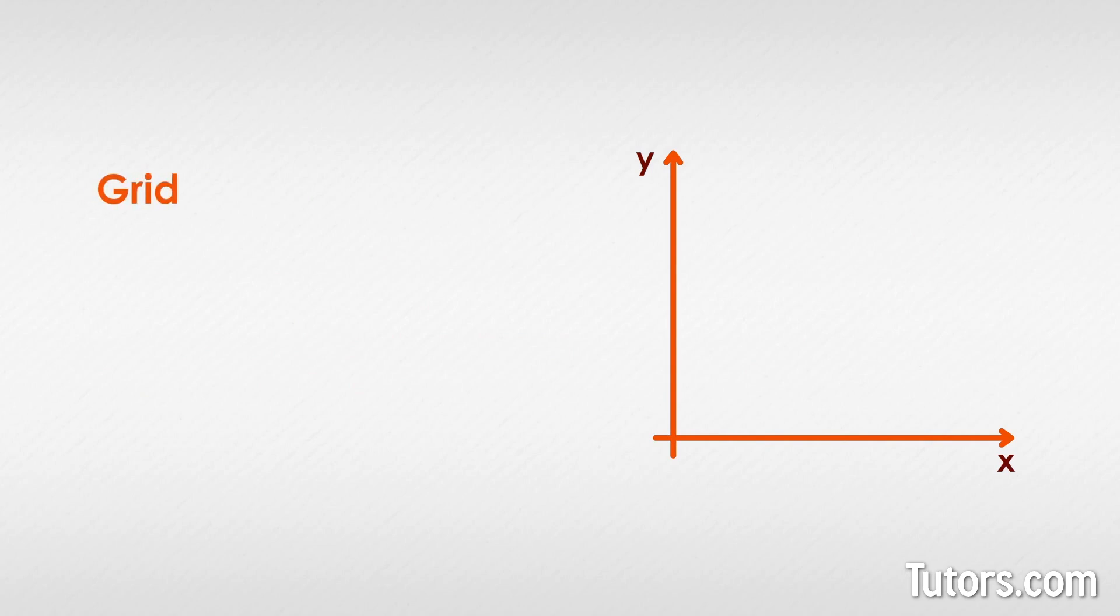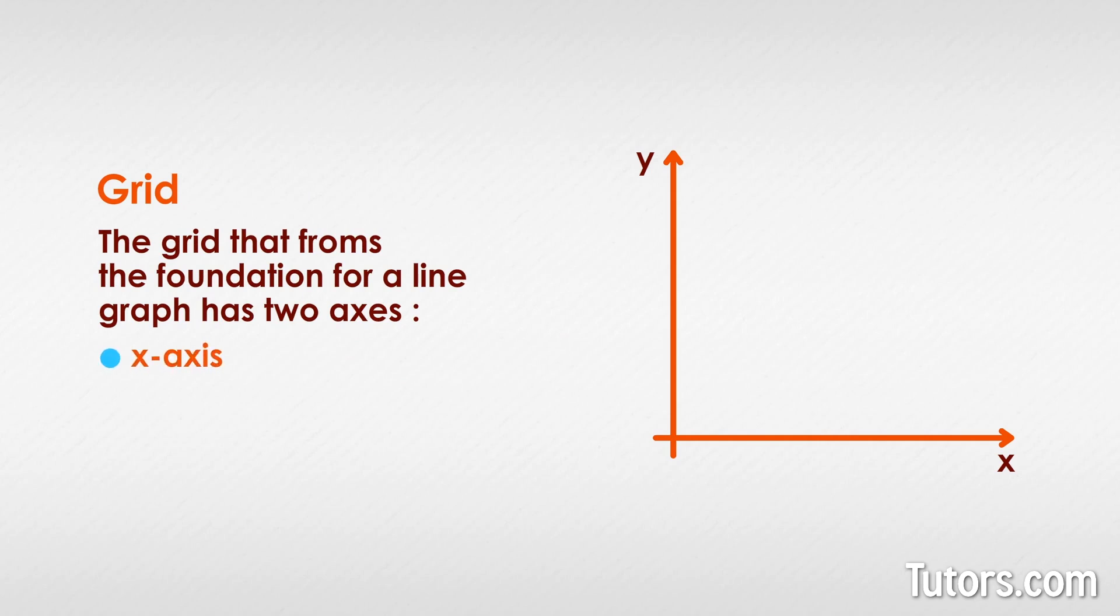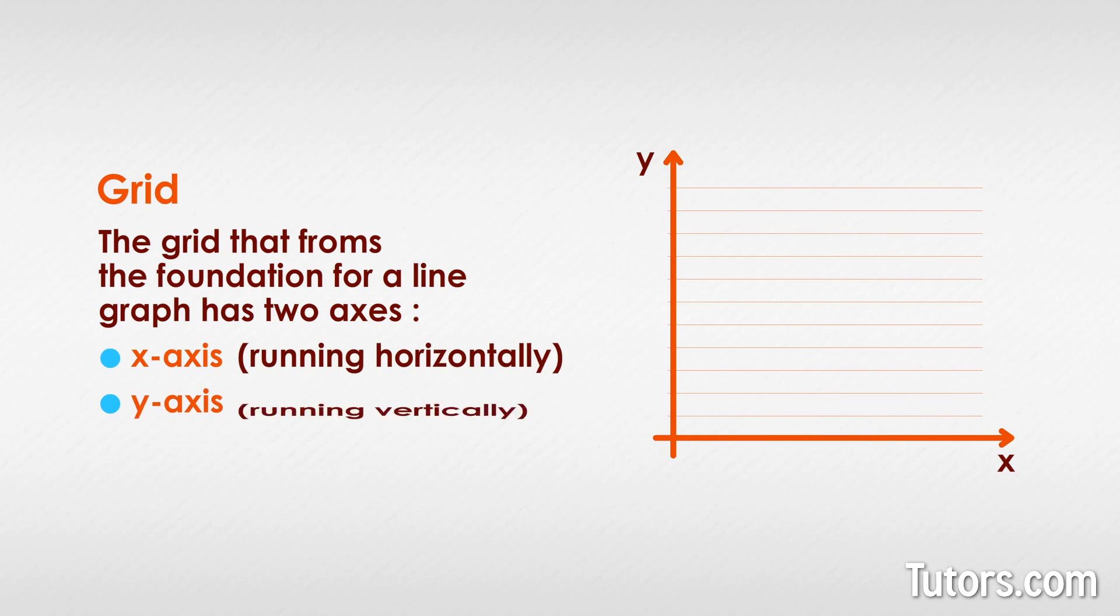What is a grid? The grid that forms the foundation for a line graph has two axes: the x-axis, running horizontally, and the y-axis, running vertically.